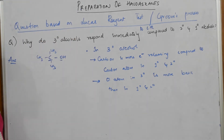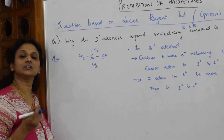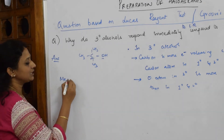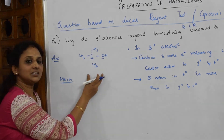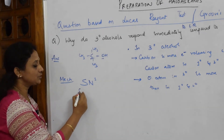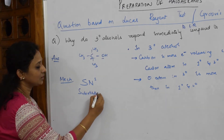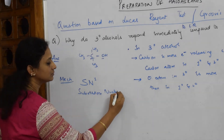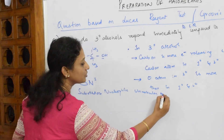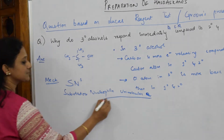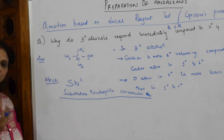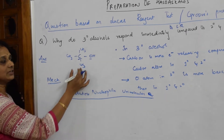Now let us see what actually happens inside that tertiary alcohol when you add HCl and anhydrous ZnCl2, that is Lucas reagent. The tertiary alcohol will follow a mechanism called SN1 — substitution nucleophilic unimolecular reaction — where only one molecule participates and the rate-determining step is the slower step.